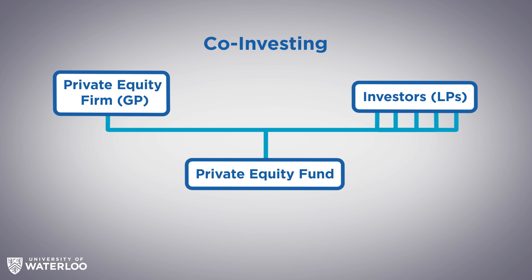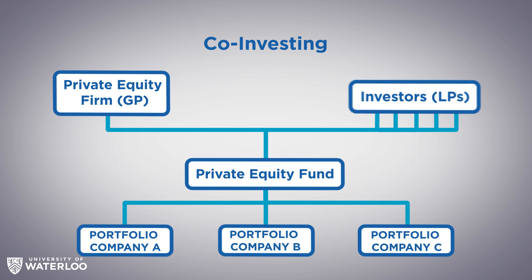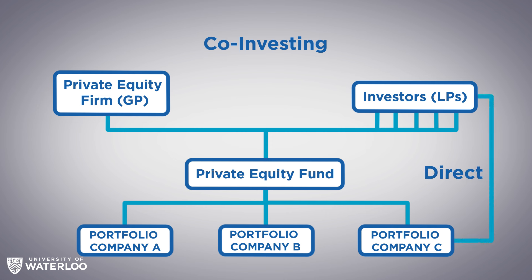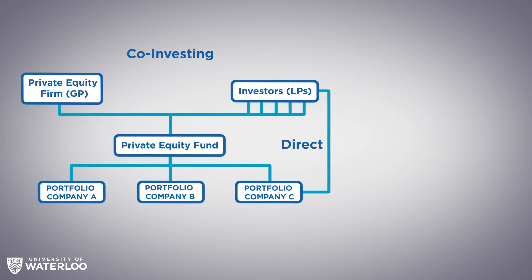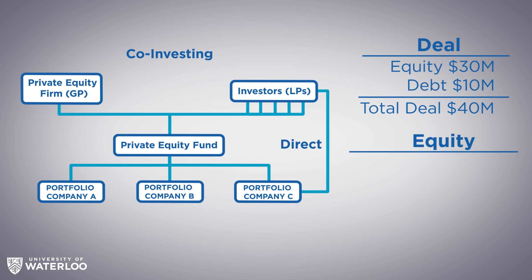What that means is when the fund looks for deals, it can allow the investor to participate not only through the fund, but directly as well. For example, let's say the fund is looking at an investment in a $40 million company, and it needs $30 million in equity and $10 million in debt. The equity portion without co-investing would be given entirely by the fund — usually the full $30 million.